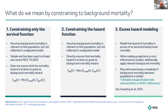There are at least three different approaches one can take here. Firstly, the simplest: we can just constrain the survival function. That's relatively simple and has been used in at least one recent NICE technology appraisal as Sweeting identified. But it doesn't ensure that the mortality hazard in each state is at least as great as in the background. Method two does exactly that — it constrains the hazard directly.